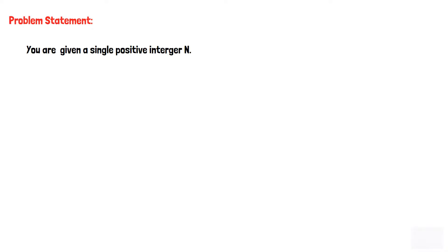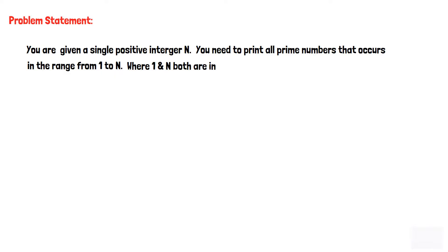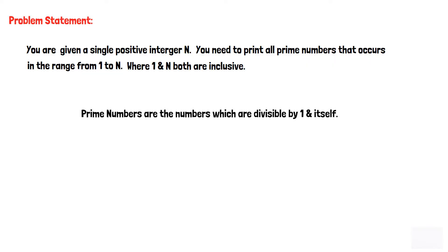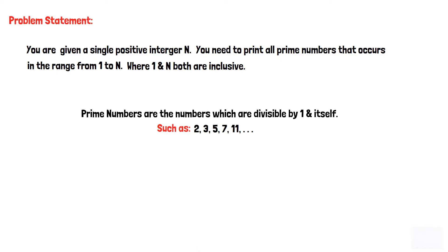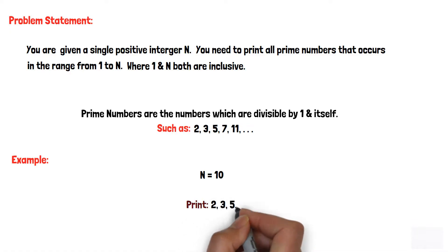In this video we will build a flowchart for the given problem statement: you are given a single positive integer n, and you need to print all the prime numbers that occur in the range from 1 to n, where both 1 and n are inclusive. As we all know, prime numbers are divisible by 1 and themselves, such as 2, 3, 5, 7, 11, etc. Additionally, 1 is not a prime number nor composite. For example, where n equals 10, our program must print all prime numbers between 1 and 10, that is 2, 3, 5, and 7.